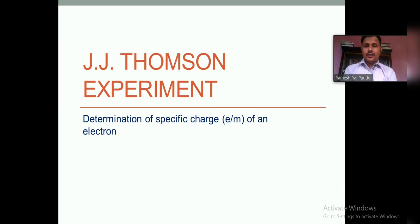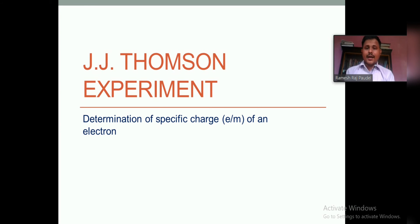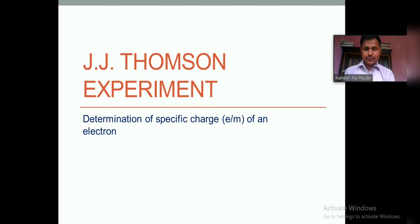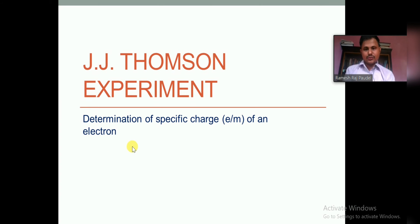The J.J. Thomson experiment is very important for exams — long questions, short questions, and numericals will be asked. This experiment is used to determine the specific charge of an electron. Specific charge of an electron is the ratio of the charge of the electron to the mass of the electron, simply E by M.